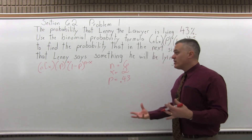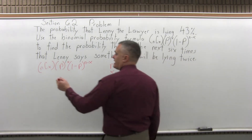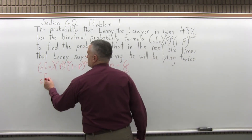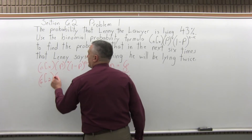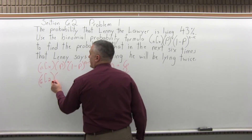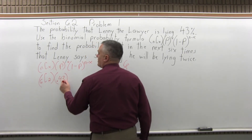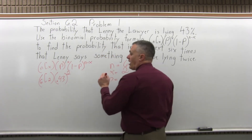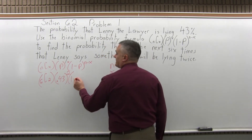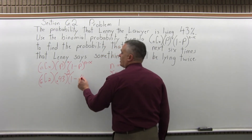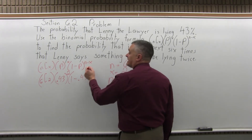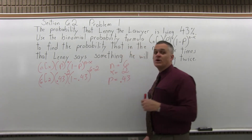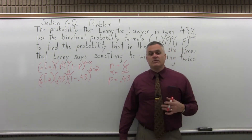Now we can go ahead and fill it in. n combination x will be 6 combination 2. Then p to the x is 0.43 to the power 2. And 1 minus p to the n minus x is 1 minus 0.43 to the power of 6 minus 2.